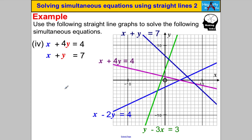One more: x + 4y = 4 is this line here, and x + y = 7 is this one here. Where does the purplish line and the dark blue line intersect? They intersect here — it looks like x = 8, y = −1. And those are the answers. That's it for this particular skill — nice and easy. Thanks for watching.